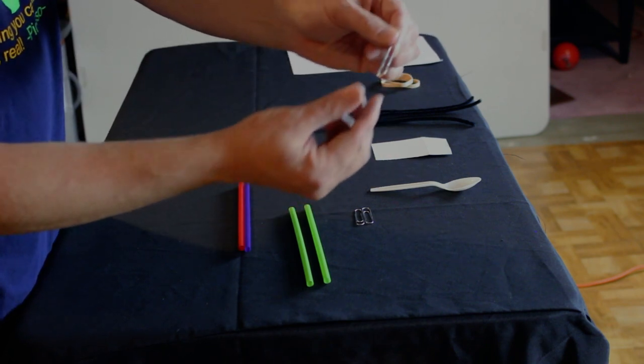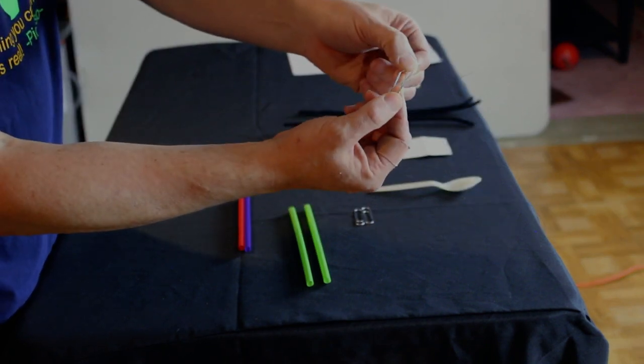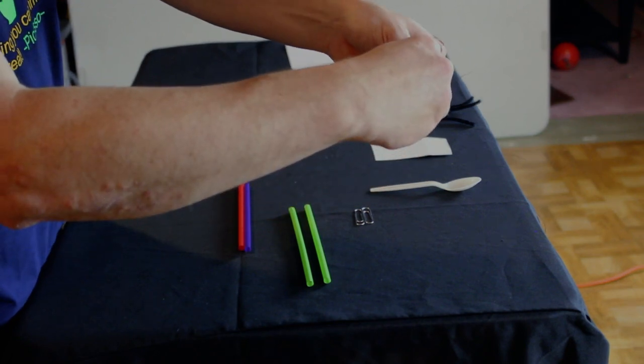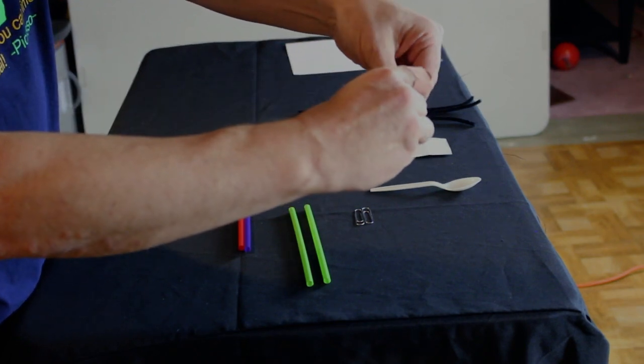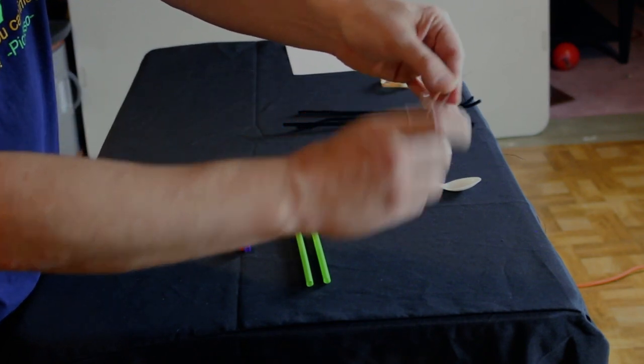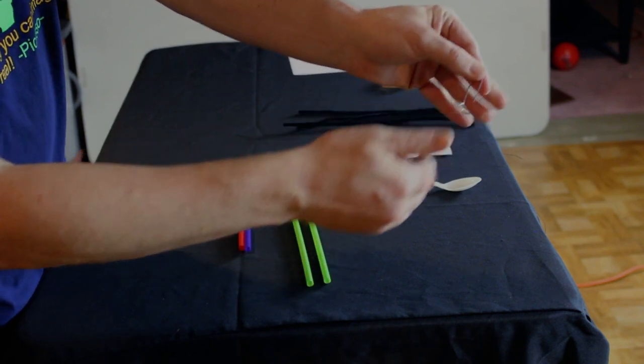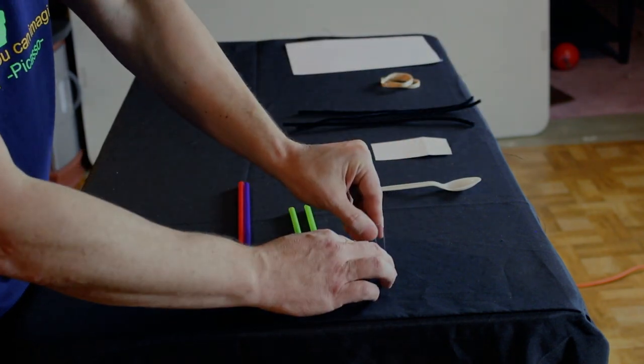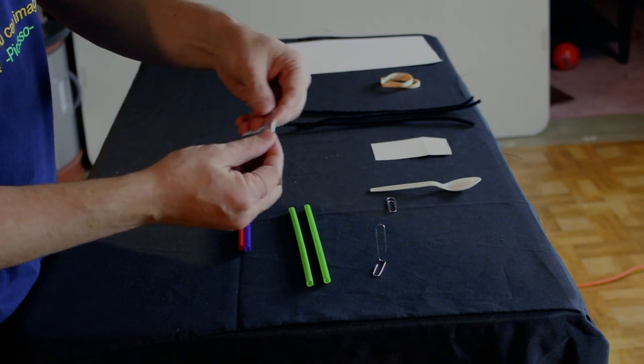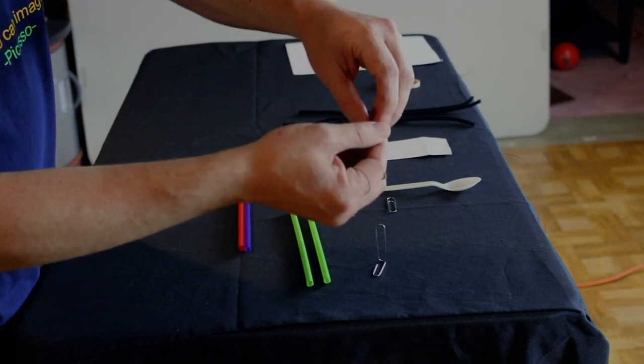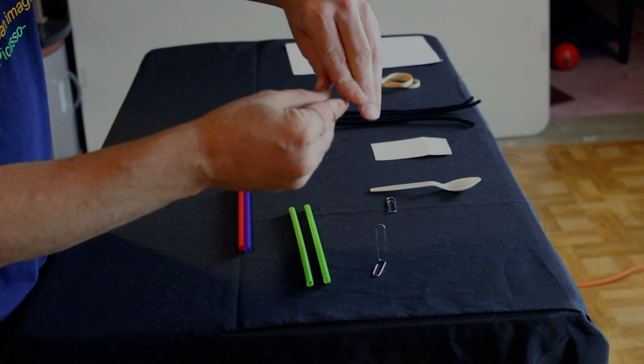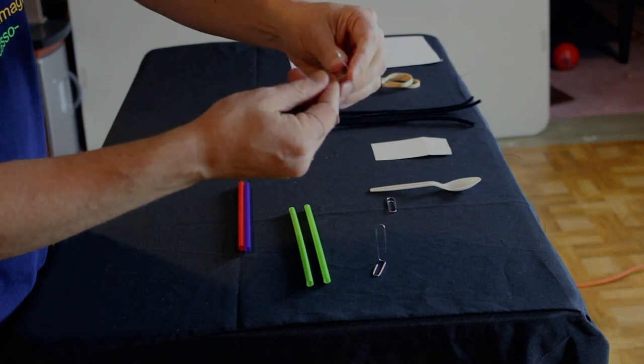Take a paper clip, and you're going to bend it just so that top, that middle piece comes up to a 90 degree angle. Like so. So we got one. Let's do it again. One and two.